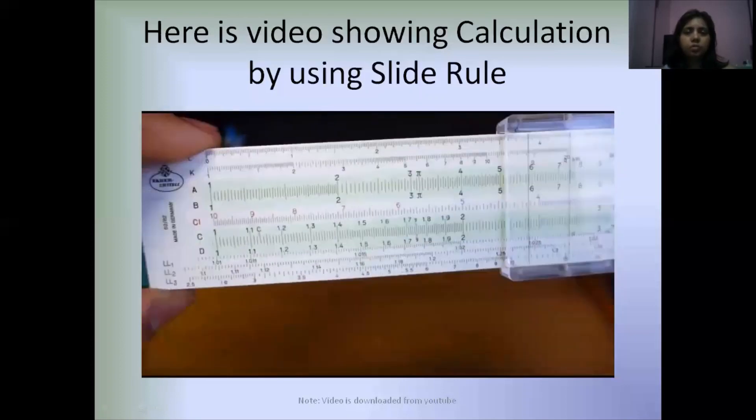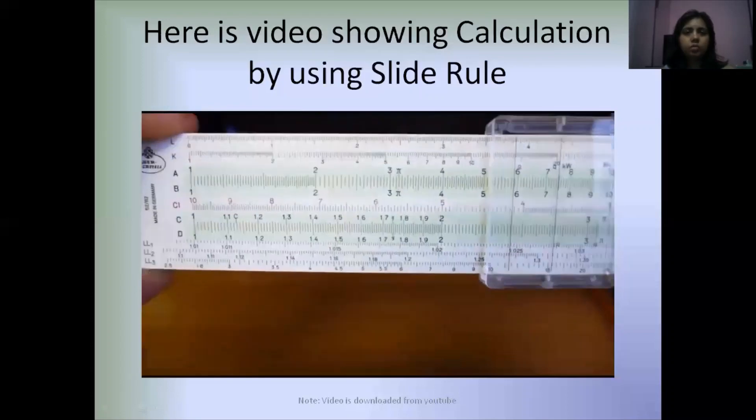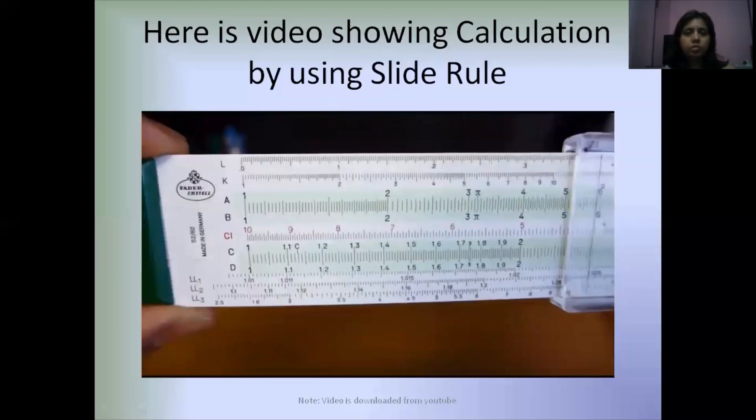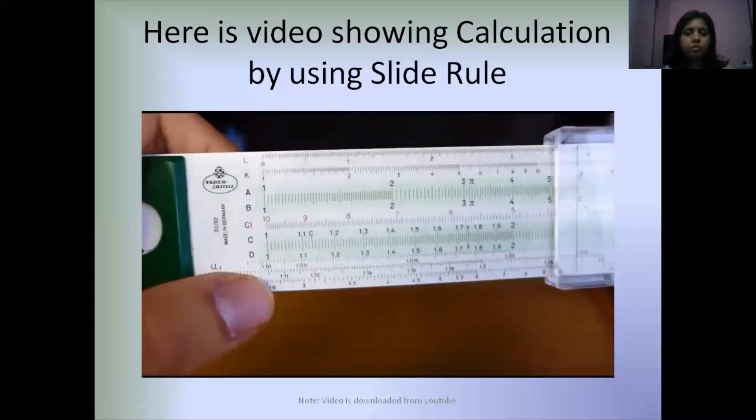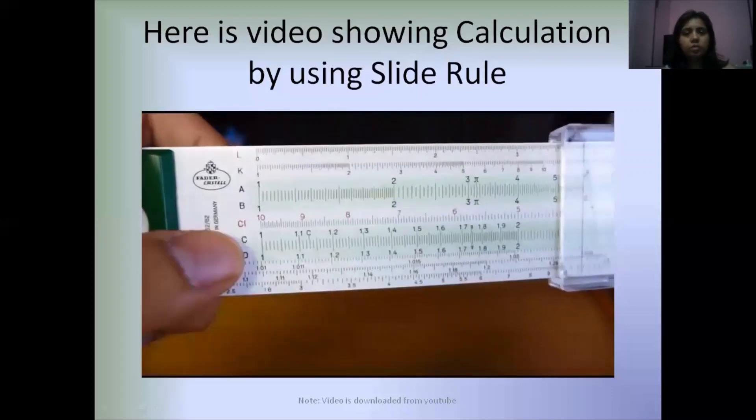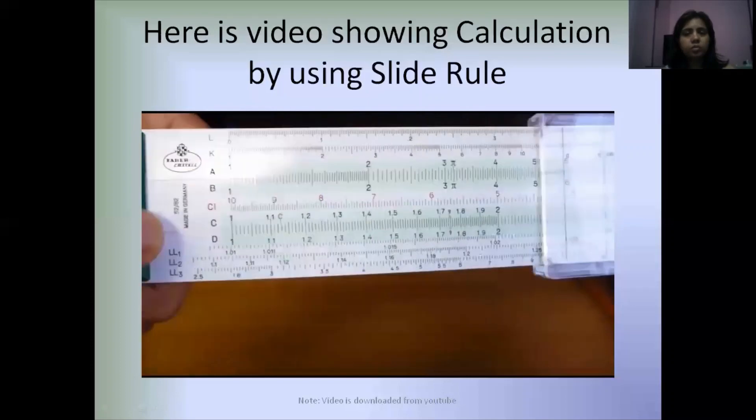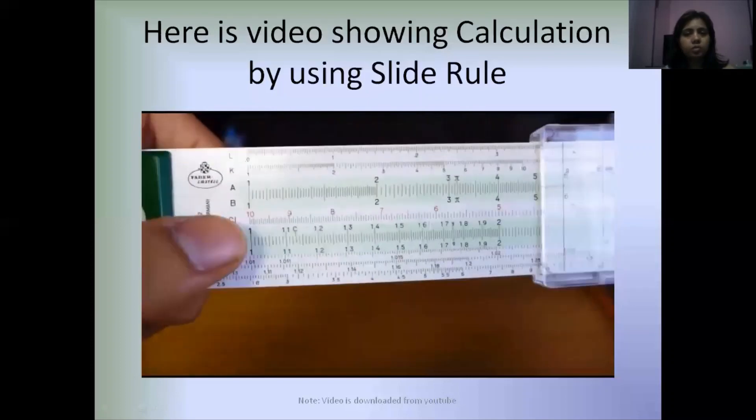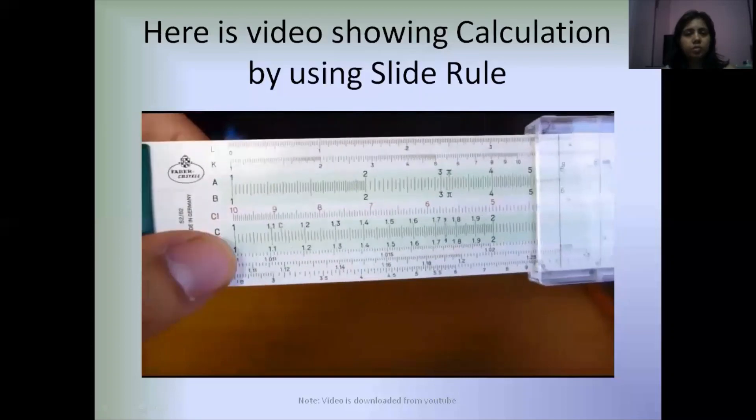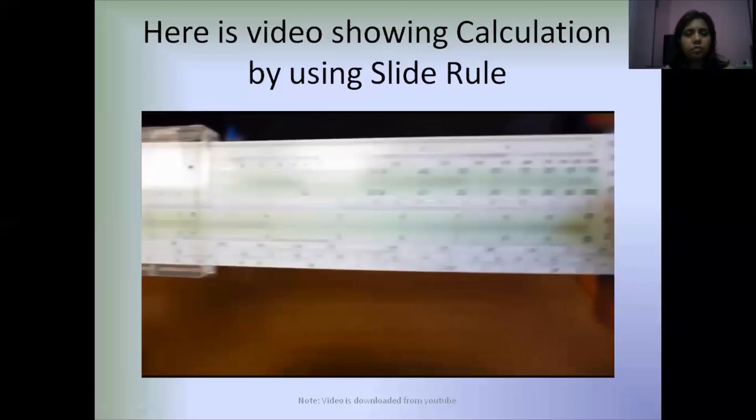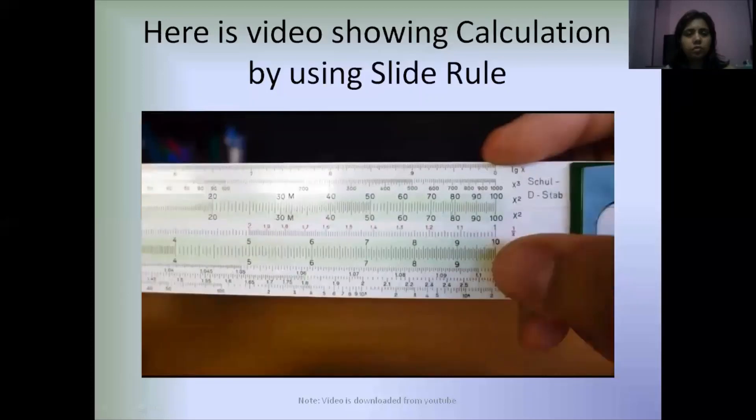How to do multiplication and division on a slide rule. It's simple. First, let's introduce the scales that we're going to use: the C scale and the D scale. These are the most basic scales on the slide rule. We're going to call the left side one on the C and D scales the left side index, and the right side one or ten the right side index.